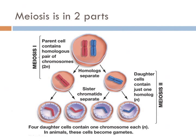To be more specific, during meiosis I, the diploid parent produces two haploid daughter cells. However, each of the daughter cells has chromosomes with two sister chromatids, meaning that the chromosomes are still replicated.